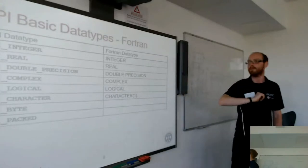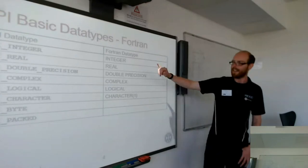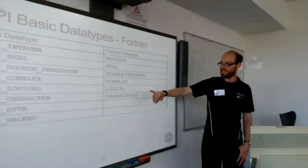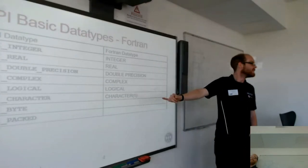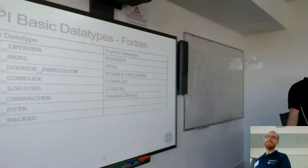In Fortran, it's integer, real, double precision, complex, logical. And characters here—MPI_CHARACTER just counts as a single character, not a string, because in Fortran it can create a string which is a type character as well.